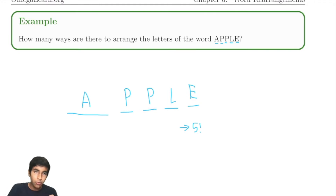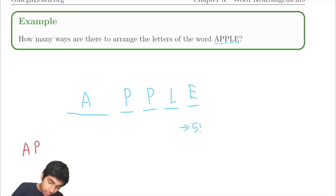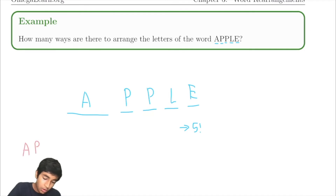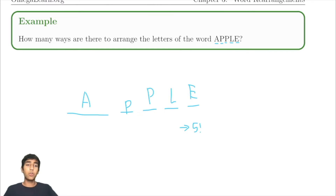We can't just say it's five factorial because, for example, if all objects were different — say we had a lowercase P and an uppercase P — then it would be five factorial ways to arrange the letters, because then there are five different letters and five slots, so five factorial by our factorial formula.